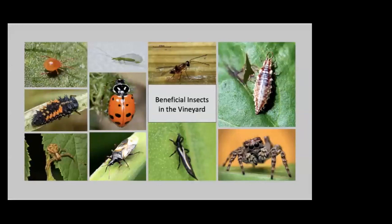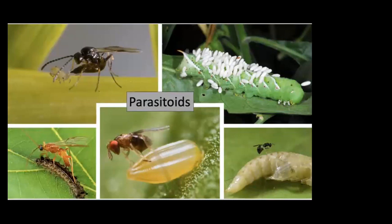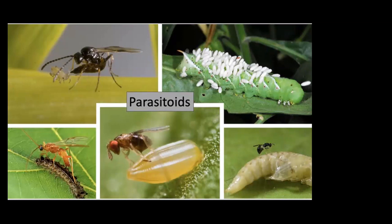Going on to beneficial insects in the vineyard. An insect is beneficial if it contributes to reducing insect pest populations by preying on or parasitizing pest species. Predators are insects that attack, kill, and feed on other insects — they feed on many insects in their lifetime. Some are specialists feeding on only one or a few closely related insects; others are generalist predators feeding on a variety. Parasitoids are immature insects that derive their nutrients from living on or in another species, known as their host. The host dies when the parasitoid reaches maturity, and adults are free-living and not dependent on the host.